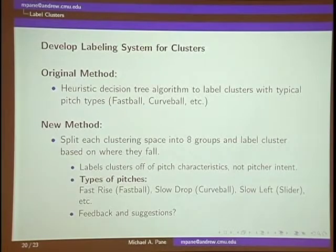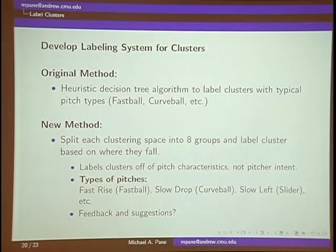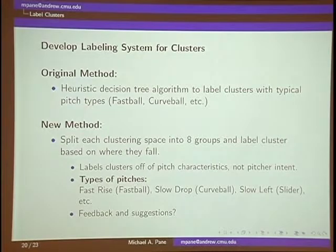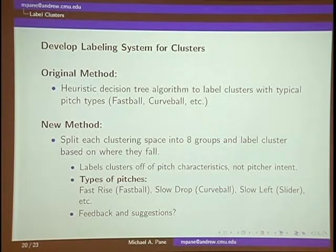Next, we have our well-separated clusters, but we don't actually have a pitch label for them, so we need to develop a way to label each pitch type. I initially developed a heuristic decision tree algorithm that labels clusters based on typical pitch types — if the pitch is the fastest cluster, label it a fastball; if it moves a certain amount, label it a curveball. It does decently well, but one issue is that if you ask a pitcher what pitch he throws, he might say a slider, we might say curveball, and the catcher might say it's a slurve. It's really hard to identify what each pitch actually means.